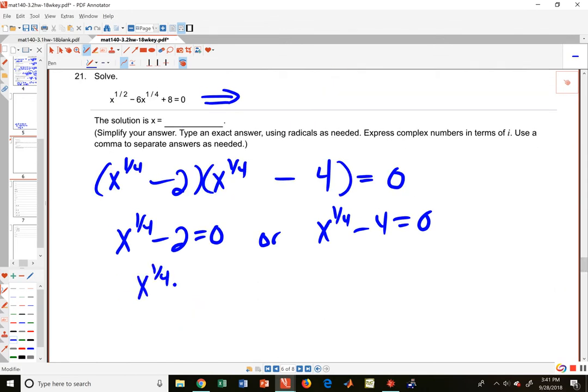So you get x to the one-fourth minus two equals zero, or x to the one-fourth minus four equals zero. So you just bring everything to the right. You raise both sides to an exponent of four to get rid of that fractional exponent there. Don't let that trip you up.